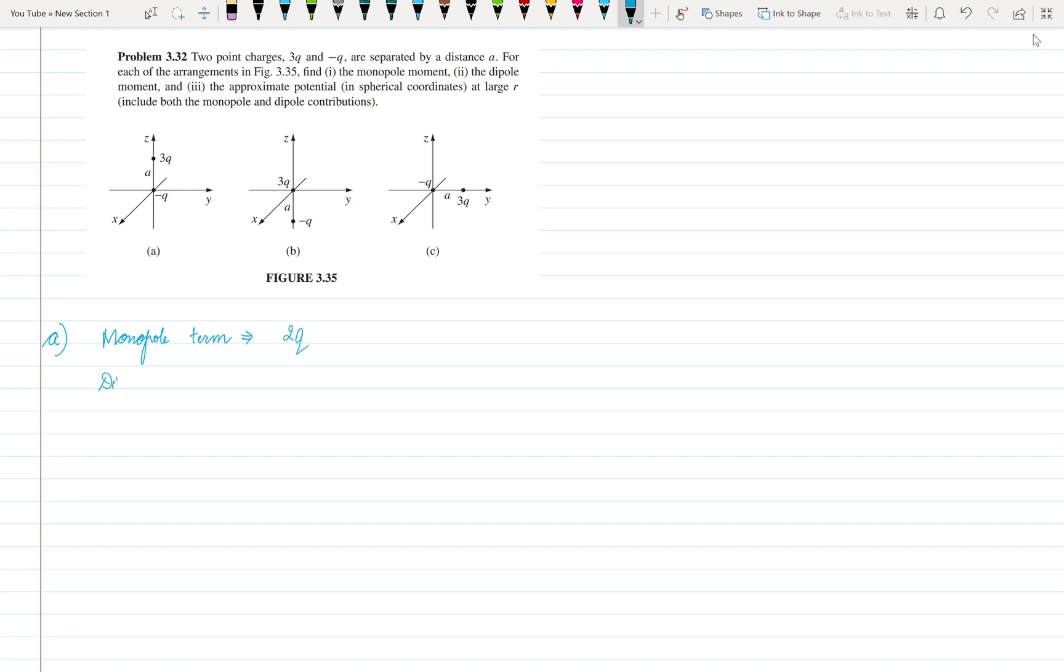Dipole term, dipole moment to dipole term. It is given by P into the distance. So P is the charge 3Q and the distance from the center which is A and the direction is Z cap, upside.